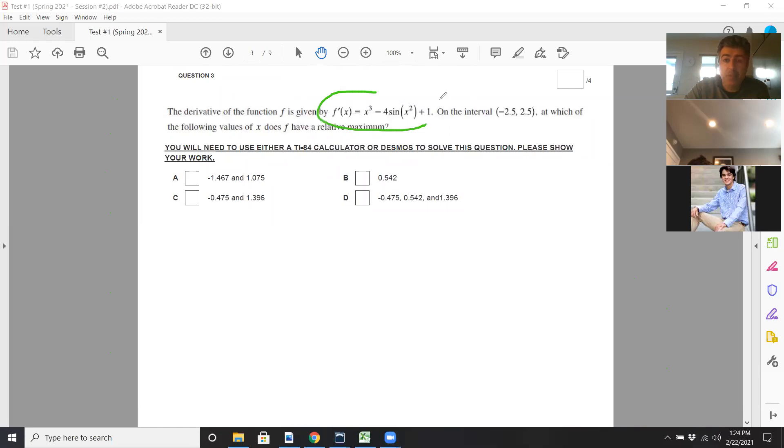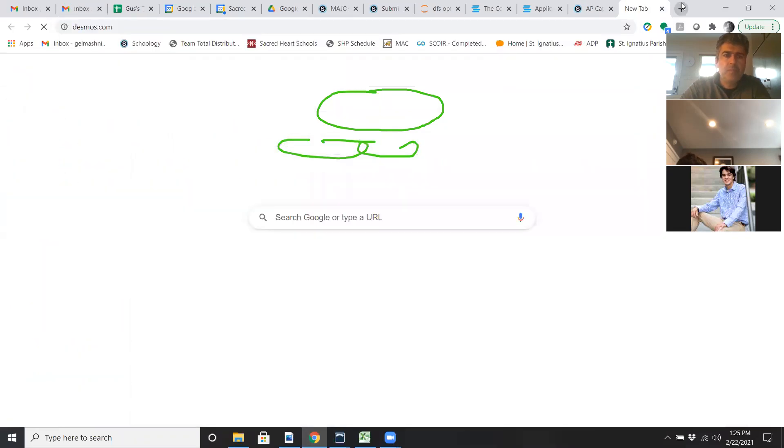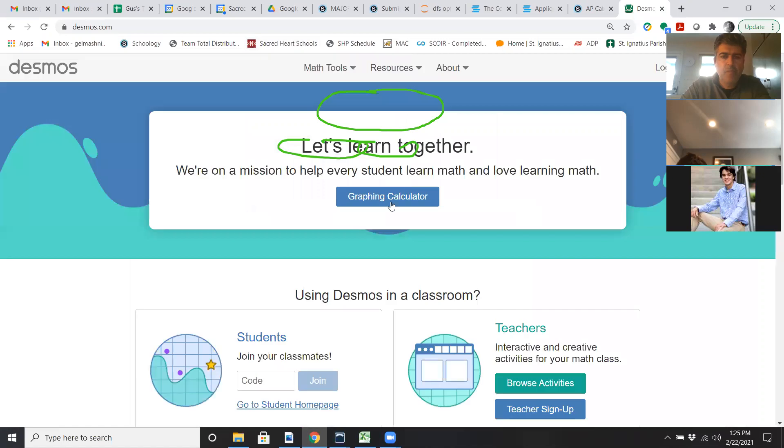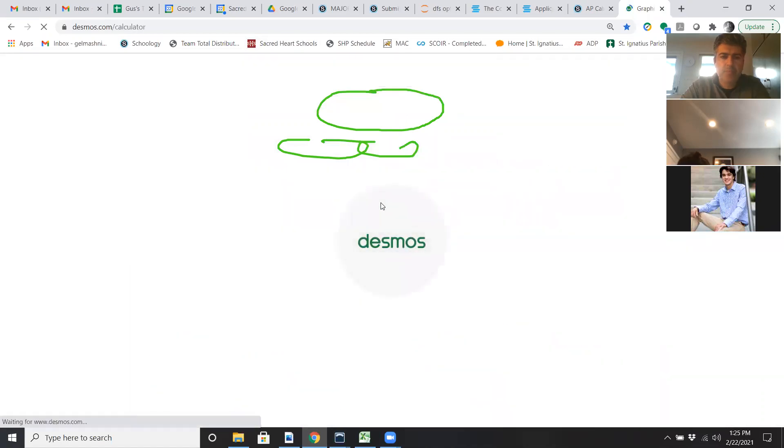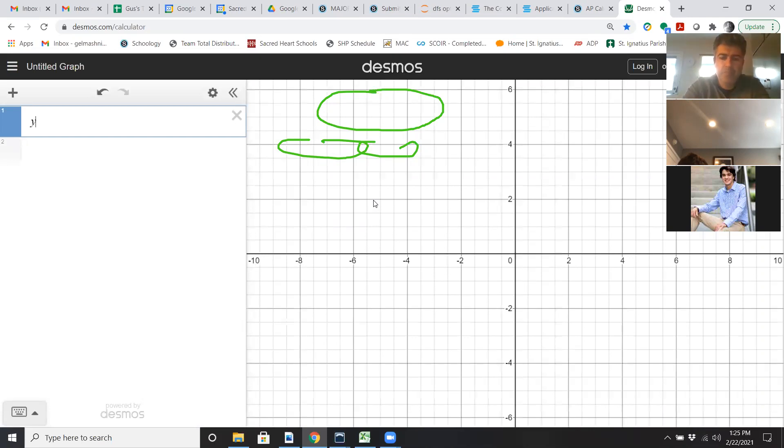Okay. This is an f prime equation. Okay, I'll use a calculator. Or Desmos. Let's say I use Desmos instead. So x cubed minus 4 sine x squared plus 1. Okay, it's taking a sweet little time. Okay. All right. This is an f prime graph, right?